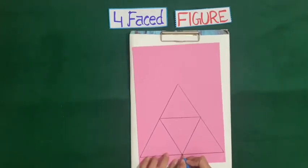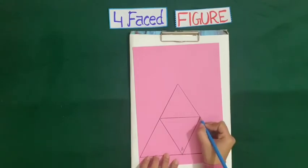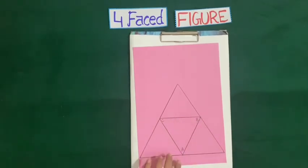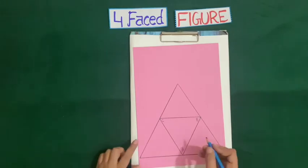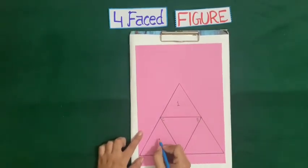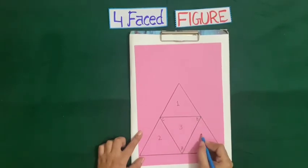So let us name this point A, this B, this one C. Now how many parts does this figure have? One, two, three, four.